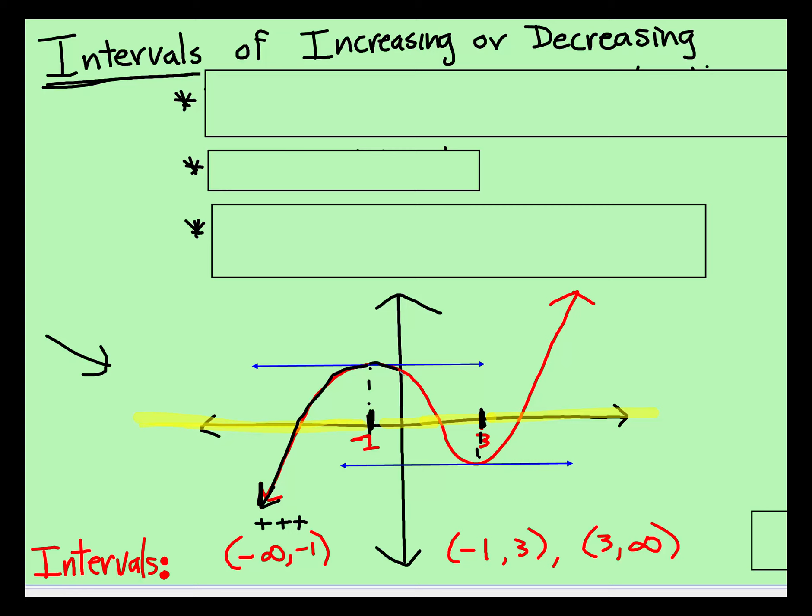But then look what happens between negative 1 and 3. It's decreasing. And then once you get at 3 and beyond without touching, it is increasing again. And these are the intervals. This is how you would show that.